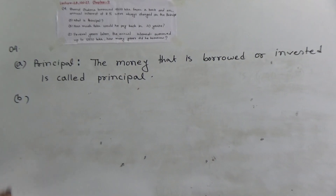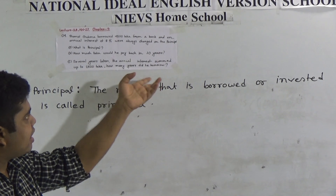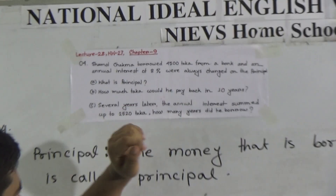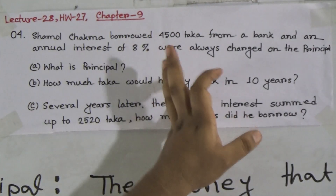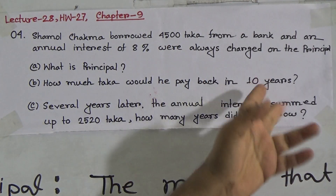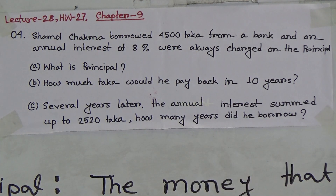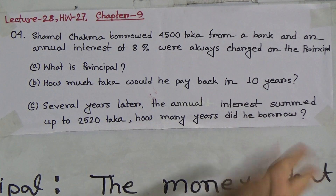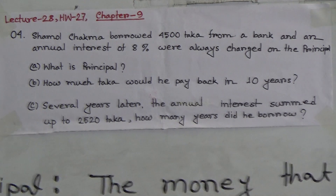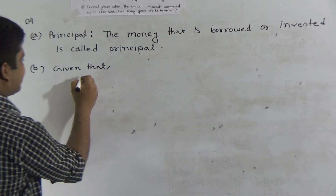Question number B: how much Dhaka would he pay back in 10 years? He must pay back the principal and also the simple interest, but simple interest is not given here. For this reason, we find the simple interest first. After that, we add that simple interest with the principal, and that amount of Dhaka is what he would pay back after 10 years. So now write: given that — what information is given?